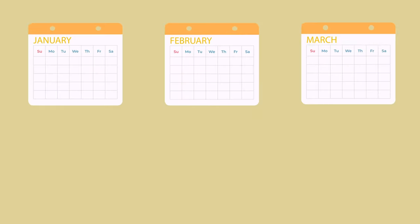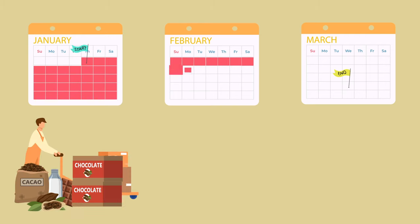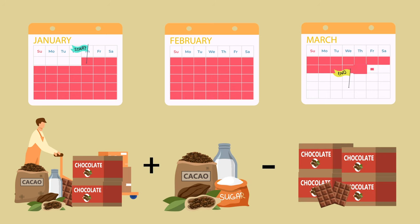The cost of goods sold relies on the value of inventory during an accounting period, which can be calculated by taking the beginning inventory, adding purchases during the period, and then subtracting the ending inventory.